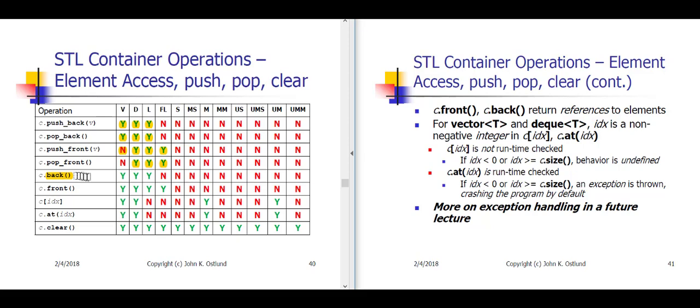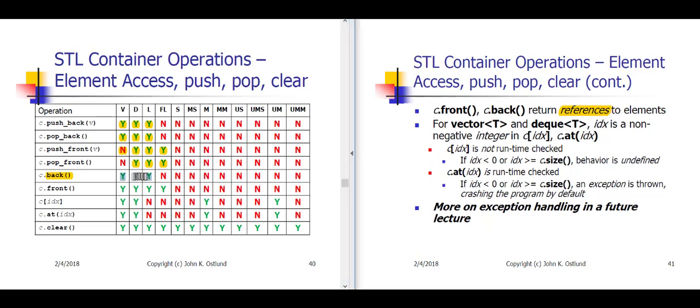The back member function returns a reference to the element at the back of the container, and that's supported for vector, deck, and list, but not for the forward list. If we wanted to get a reference to the back element of a forward list, we would have to write our own algorithm to traverse through all of the elements from the first element all the way to the last element, and then give a reference to that back element.